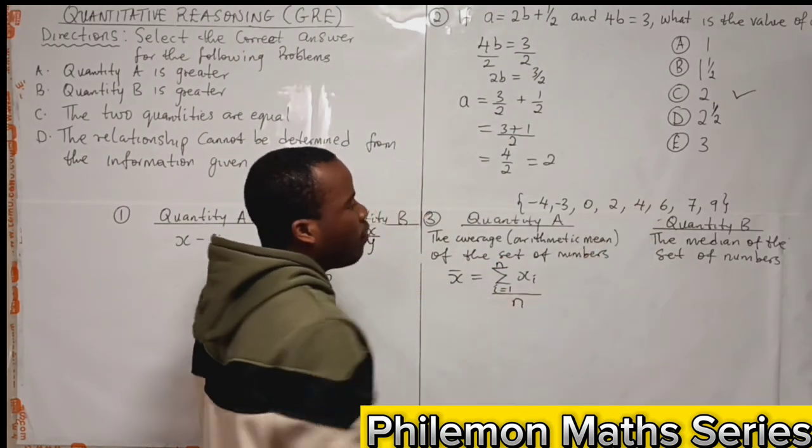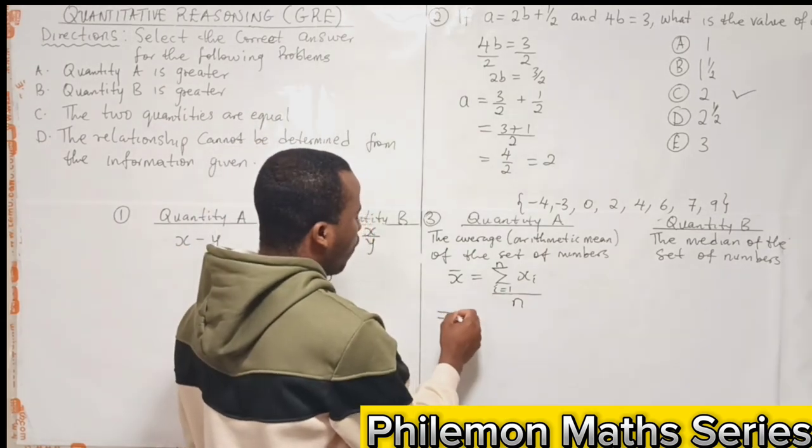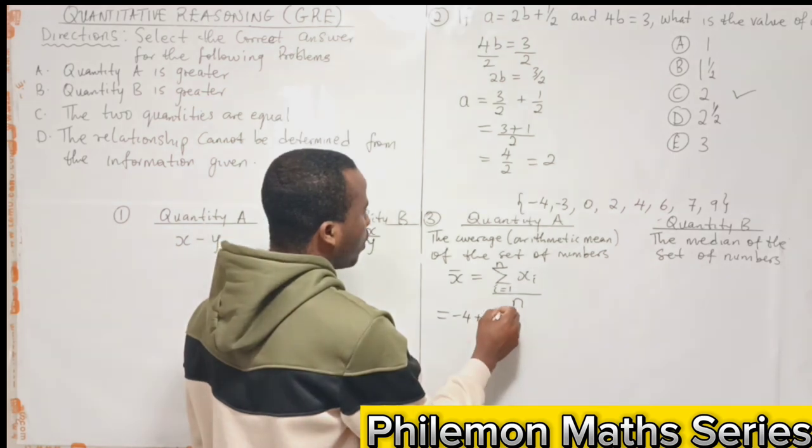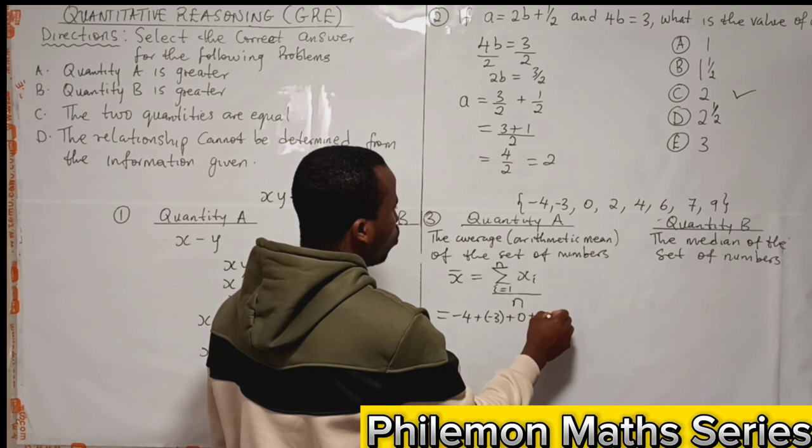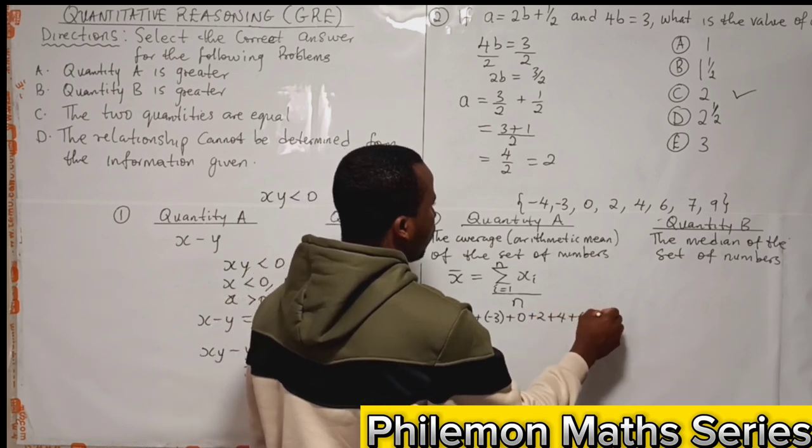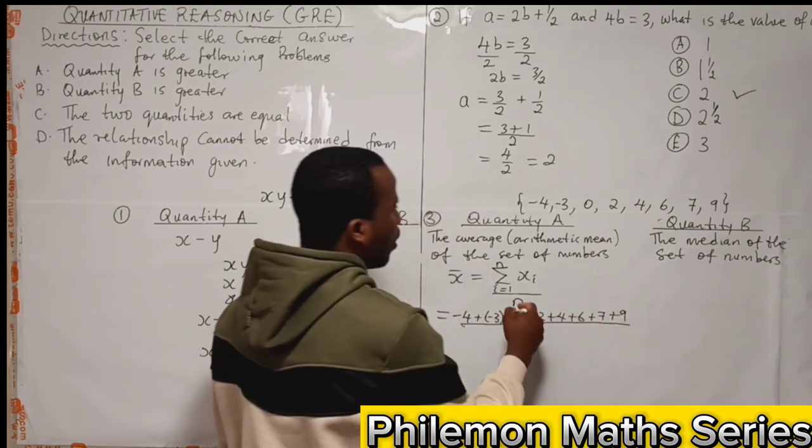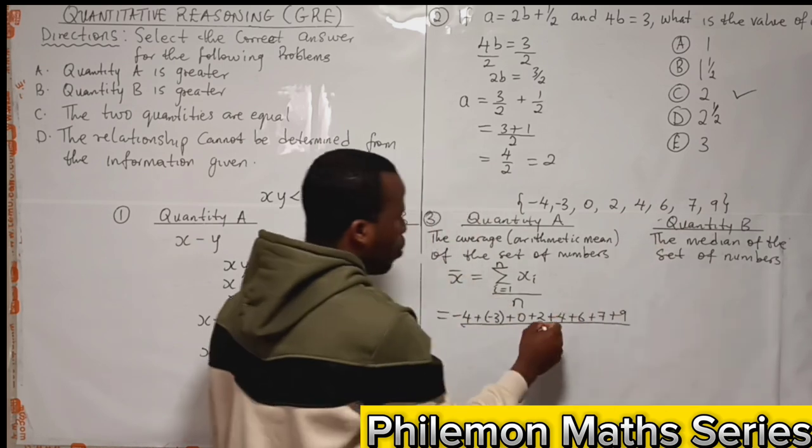So let's sum the numbers together. We have -4 + -3 + 0 + 3 + 2 + 4 + 6 + 7 + 9, all over how many numbers do we have here: 1, 2, 3, 4, 5, 6, 7, 8. We have 8 numbers.